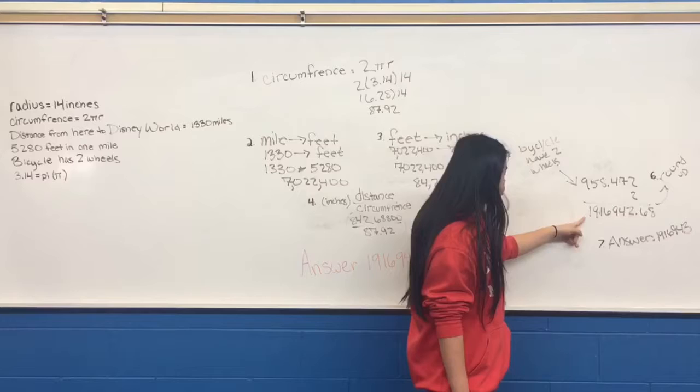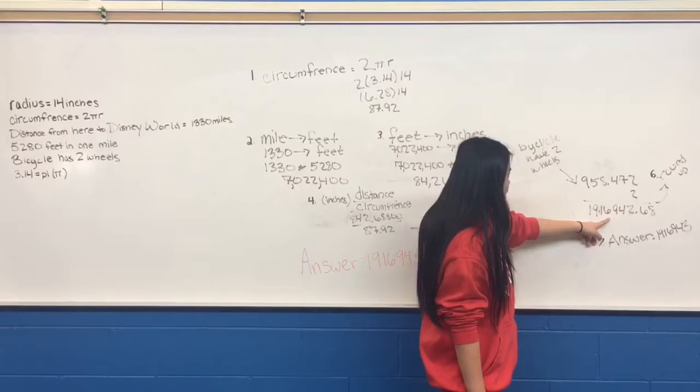Since the bicycle has 2 wheels, you multiply it by 2, and we get 1,916,942.68.